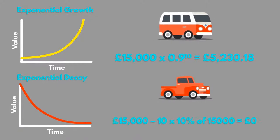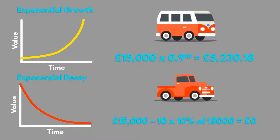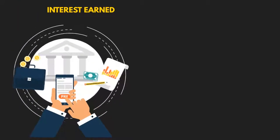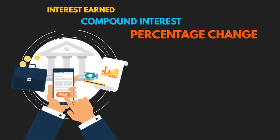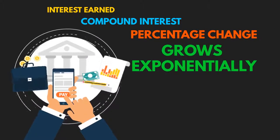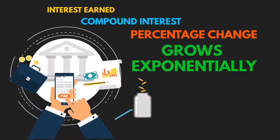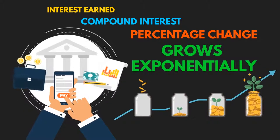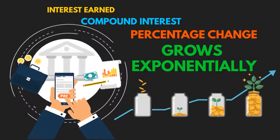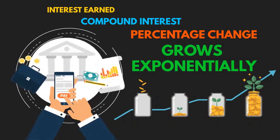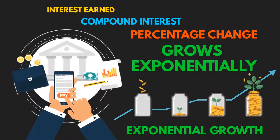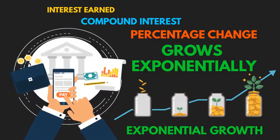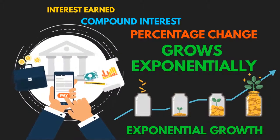Can you work out the difference using the two examples after 10 years? Our savings may increase simply due to the interest earned. Compound interest is an everyday example of repeated percentage change, which grows exponentially. The amount paid in interest is added to the balance of the account. The next time interest is calculated, the balance will be higher — this is an example of exponential growth. Interest is earned on the total amount in an account at any time, not just the initial amount.